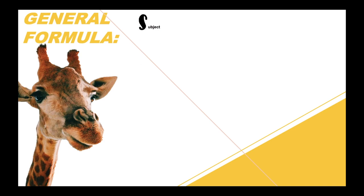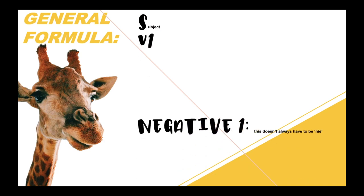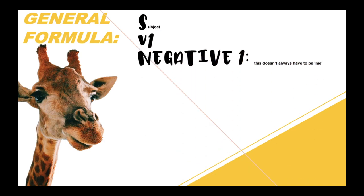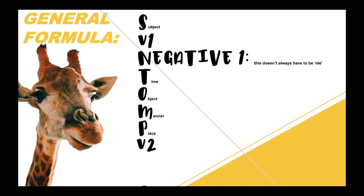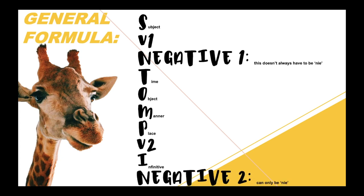So this is the general formula that we follow using stompy — obviously there are always exceptions, just remember that. So: subject, verb one, then you have your first negative after your verb one, and your first negative doesn't always have to be 'nie'. Then you have time, object, manner, place, verb two, infinitive, and then your second negative — and your second negative always has to be 'nie'.